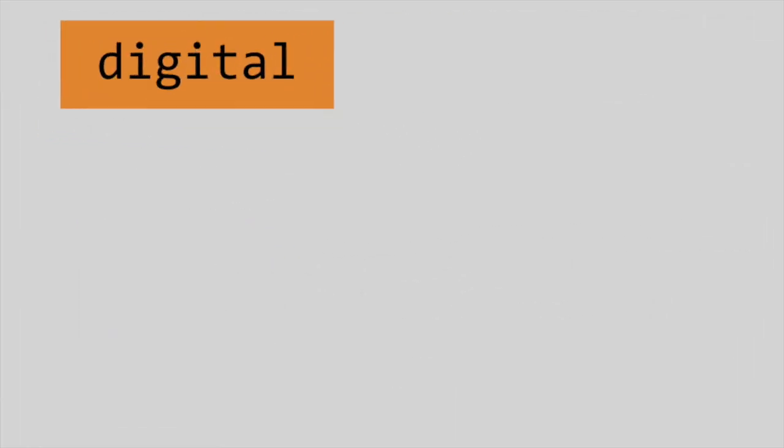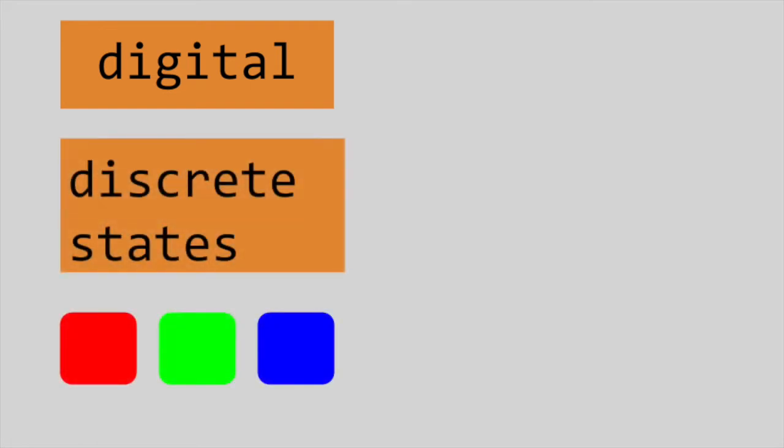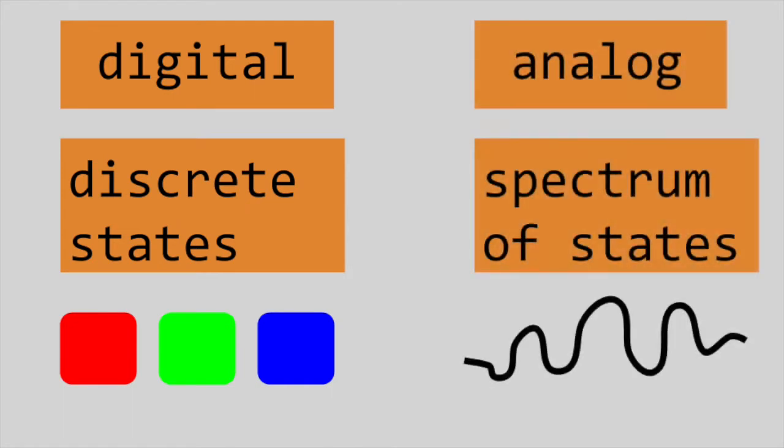Since these on or off signals are composed of finite states, we call them digital. By contrast, an analog system would cover a range of virtually infinite points.